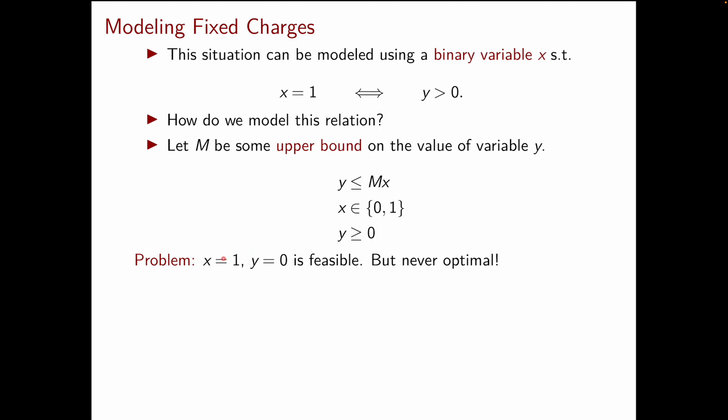Because if you replace x equal to one with x equal to zero you will obtain a solution with the same y but with a lower cost because you don't pay such a fixed cost. At this point you might be confused in a way by the simplicity of these constraints.